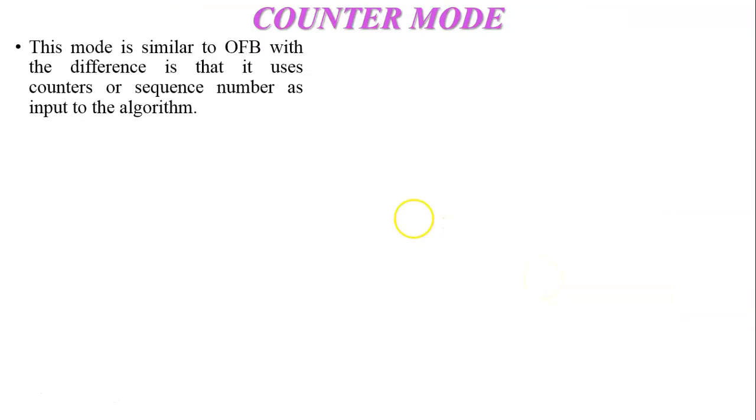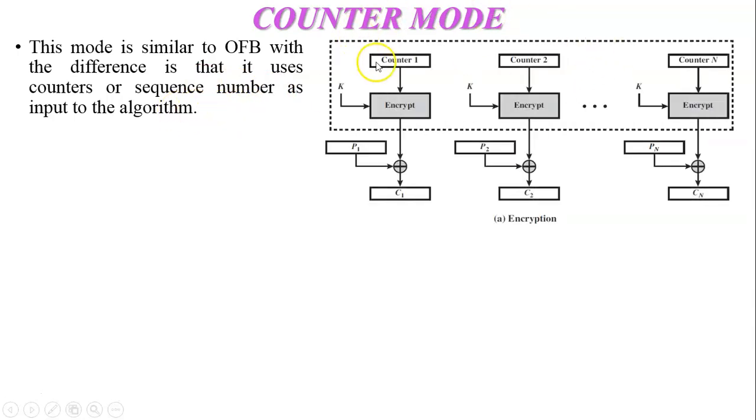Counter mode is similar to the OFB mode. The difference is that it uses counter or sequence number as input to the algorithm. In OFB mode there is an initial vector used as input of the encryption algorithm.